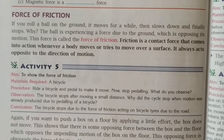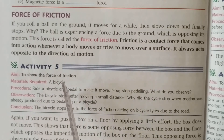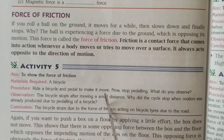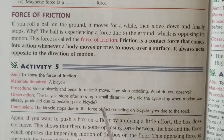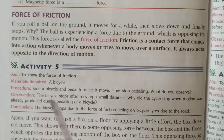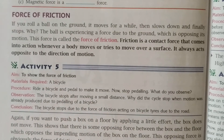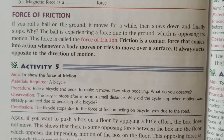In activity number 5, the force of friction is demonstrated using a bicycle. While paddling a bicycle, we observe that the cycle moves forward and the road is left behind. This shows the bicycle moving forward. And when we apply brakes, the cycle gets stopped.